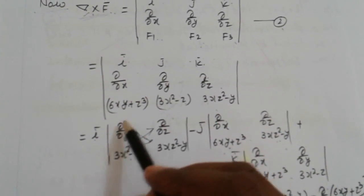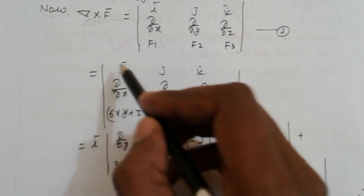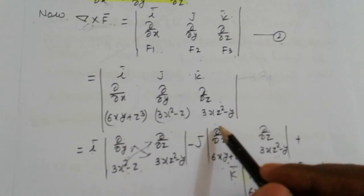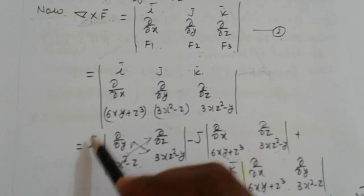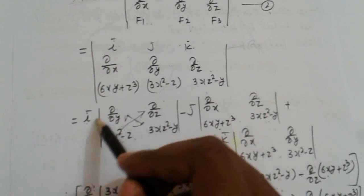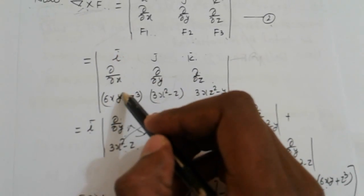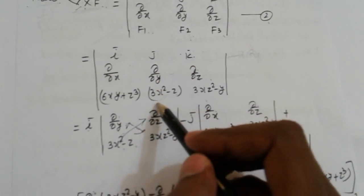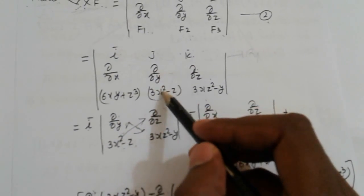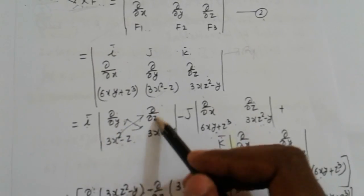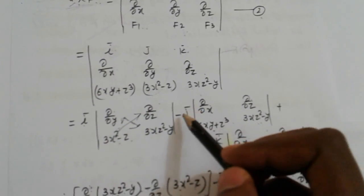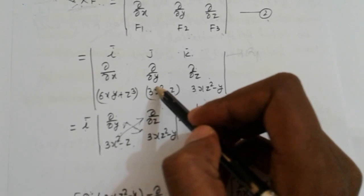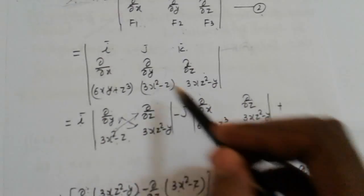Expand by the first row. For i: hide the first column and first row, and write the remaining 2×2 terms. For minus j: hide the second column and first row, write the remaining terms. For plus k: hide the third column and first row, write the remaining terms.